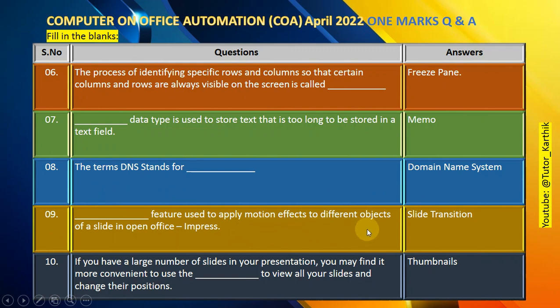Question number 9: Slide transition is the feature used to apply motion effects to different objects of a slide in OpenOffice Impress.